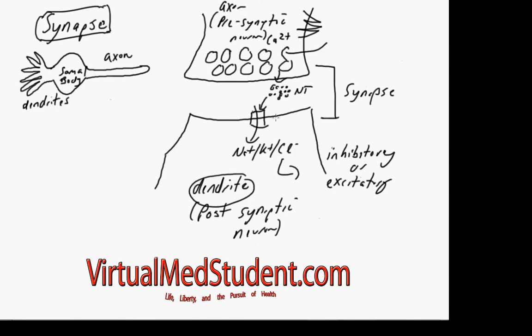You can liken this to the postsynaptic neuron as the president of a country, and the axons of the presynaptic neurons are all of his advisors. Axons are coming in and forming synapses with the postsynaptic neuron of the president, and the advisors are all trying to get their message across.